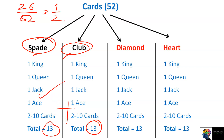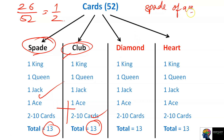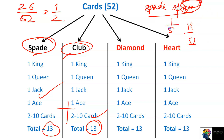Please read the question thoroughly and twice before attempting it. For example, if the question says 'ace of spade,' that is very specific — don't forget the 'of spade' part and just use spade's 13 cards. Ace of spade specifically means only 1 card, so the probability is 1 by 52 — not 13 by 52. Please read the question carefully.